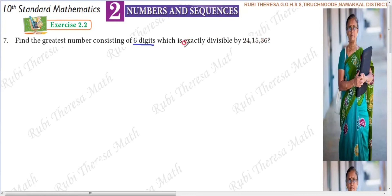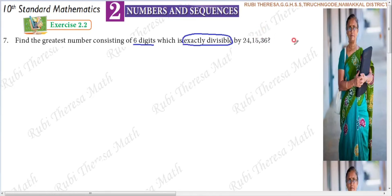What do I mean by exactly divisible? When the number that we have to find, if it is divided by 24, 15, or 36, your remainder should be equal to 0.